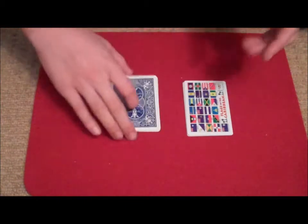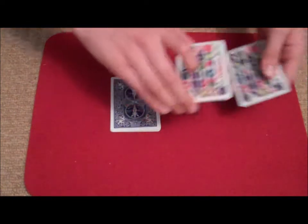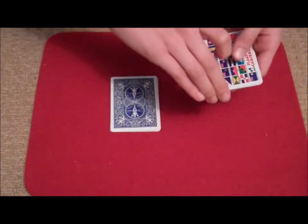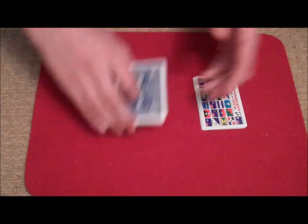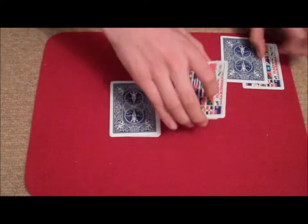So starting with whichever pile you like, just point to a pile. This pile, okay. So K, E, E. Switch. P. Switch. Well, we can't switch yet because we've come to the end of the word, so we're going to place those two cards right down there.